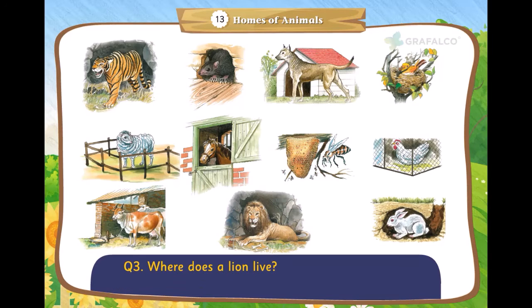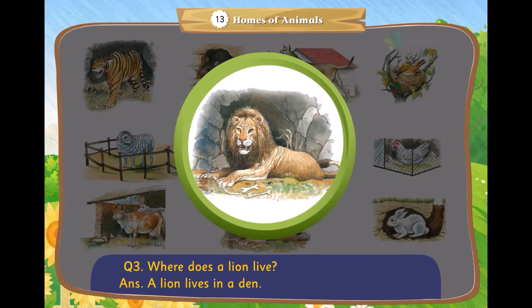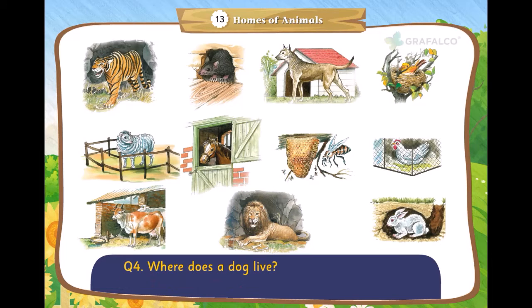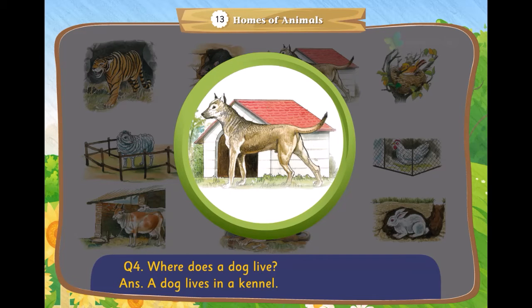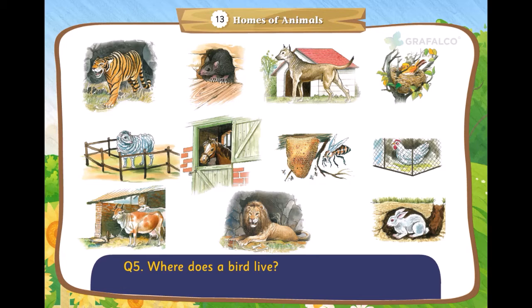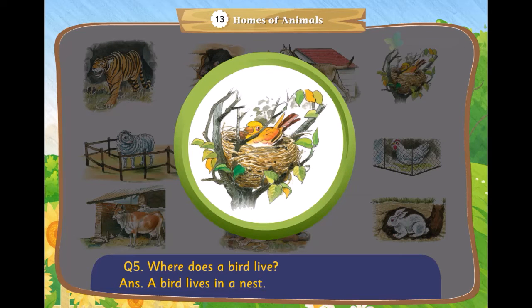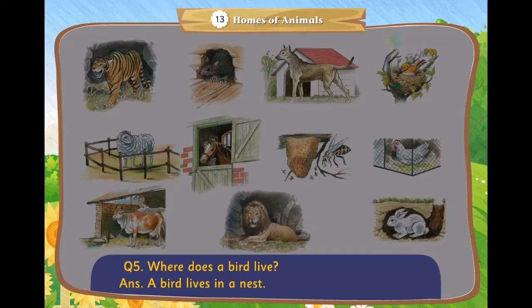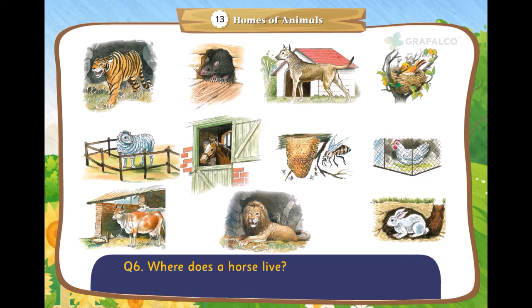hole. Where does a lion live? A lion lives in a den. Where does a dog live? A dog lives in a kennel. Where does a bird live? A bird lives in a nest. Where does a horse live? A horse lives